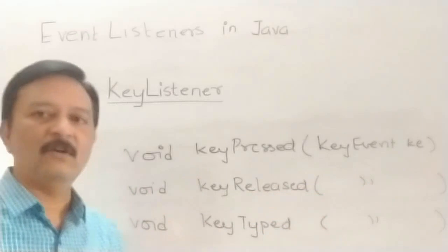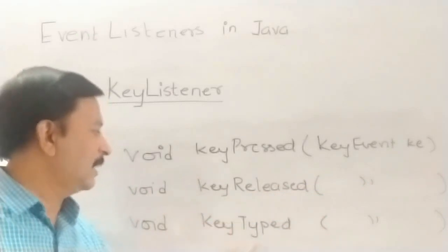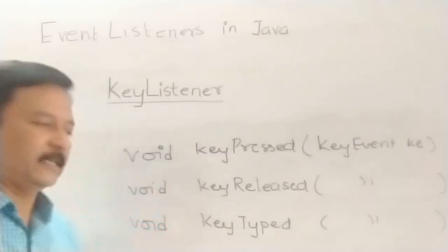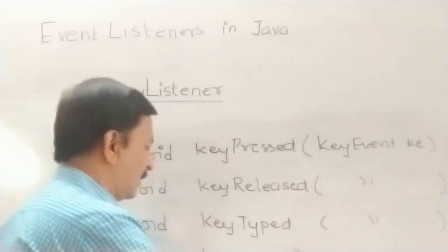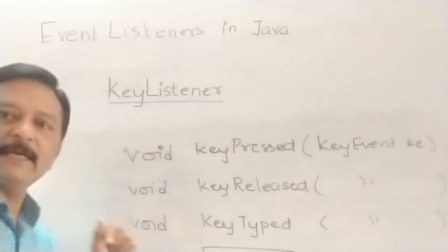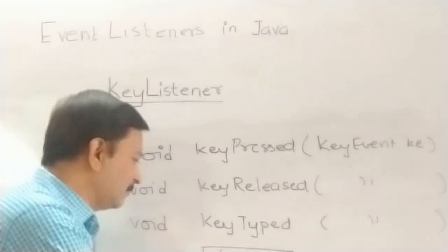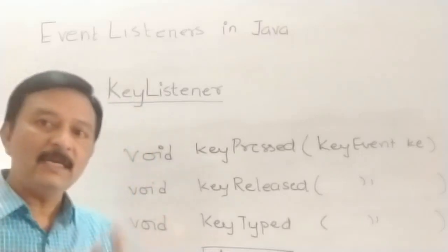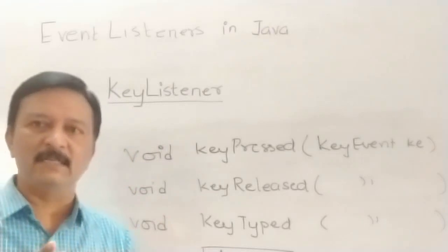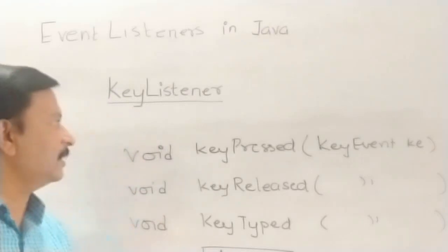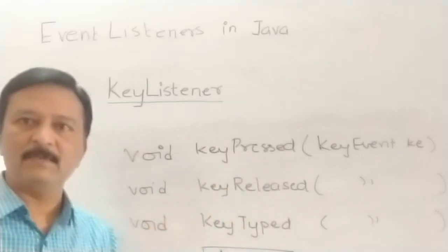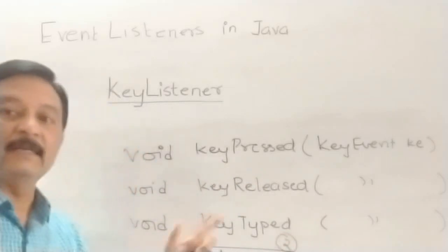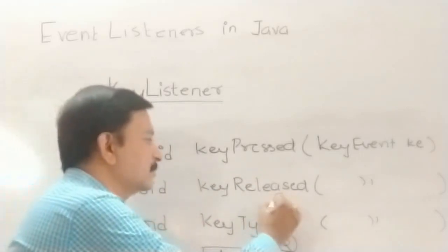The three methods are keyPressed, keyReleased, and keyTyped. Let's take an example. In our application, we have a text box, and we enter a character in that text box. When a character is entered, three events occur in this sequence: first is keyPressed, second is keyTyped, and third is keyReleased.